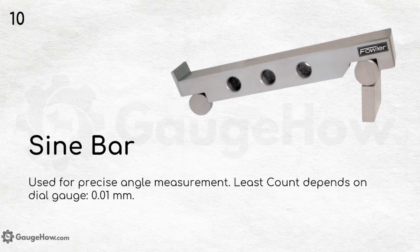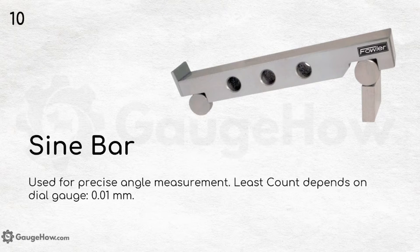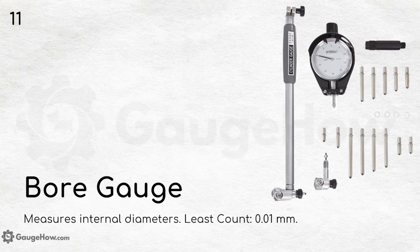Sine bar. Used for precise angle measurement; the least count depends on the dial gauge used, taken here as 0.01 mm. Bore gauge measures internal diameters and the least count is 0.01 mm.